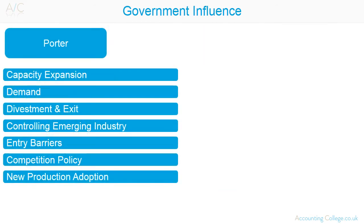As seen in the PESTLE analysis, the government can influence industries in many ways. Porter identifies seven of these ways: capacity expansion, demand, divestment and exit, emerging industry controlled by governments, entry barriers, competition policy, and new product adoption.